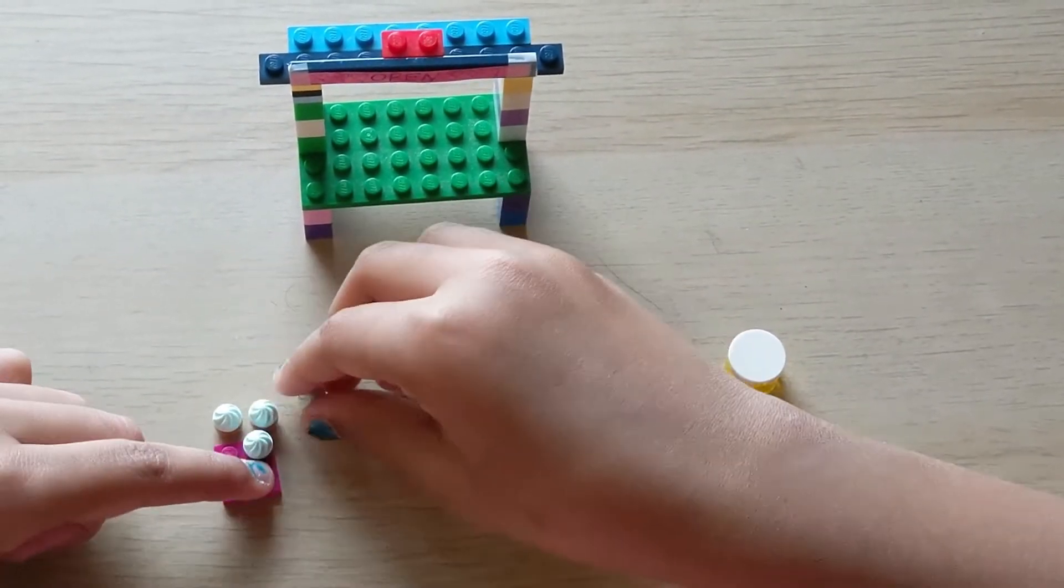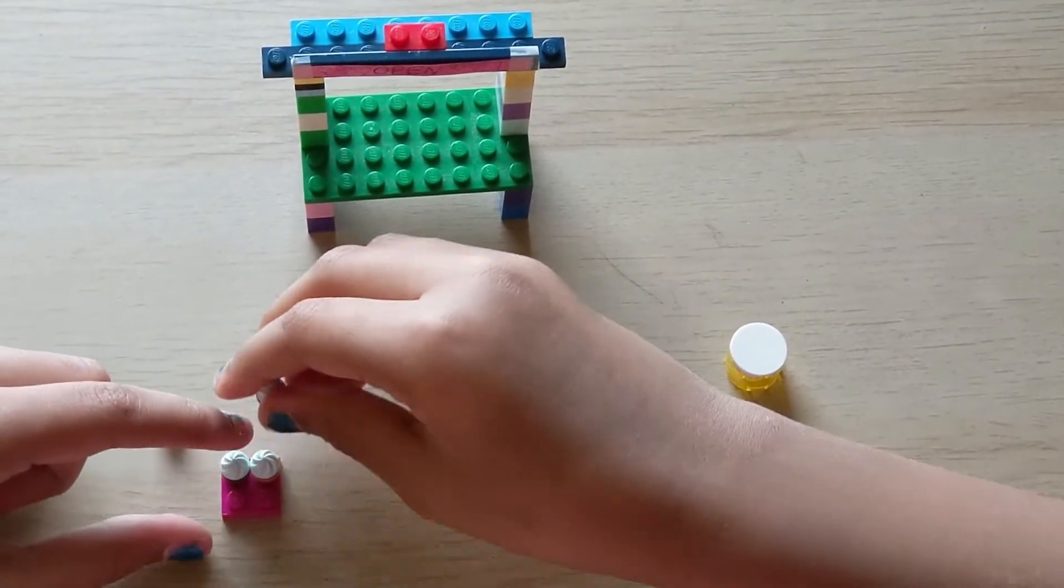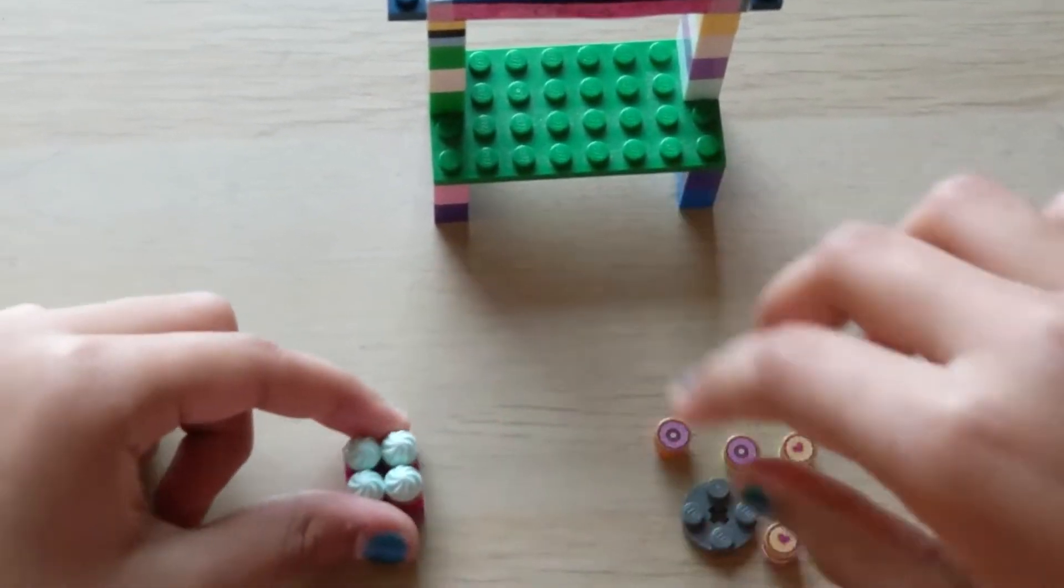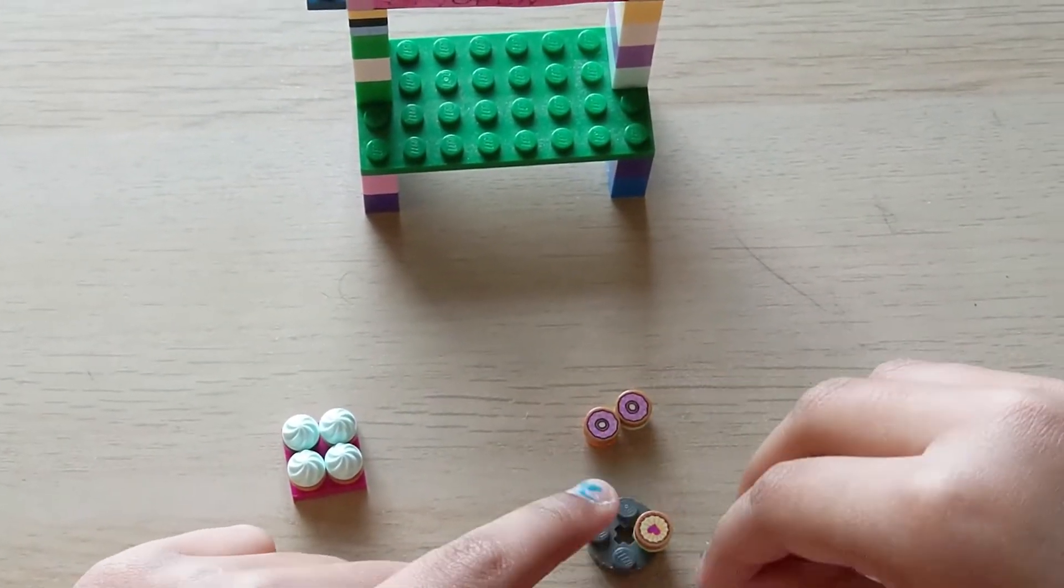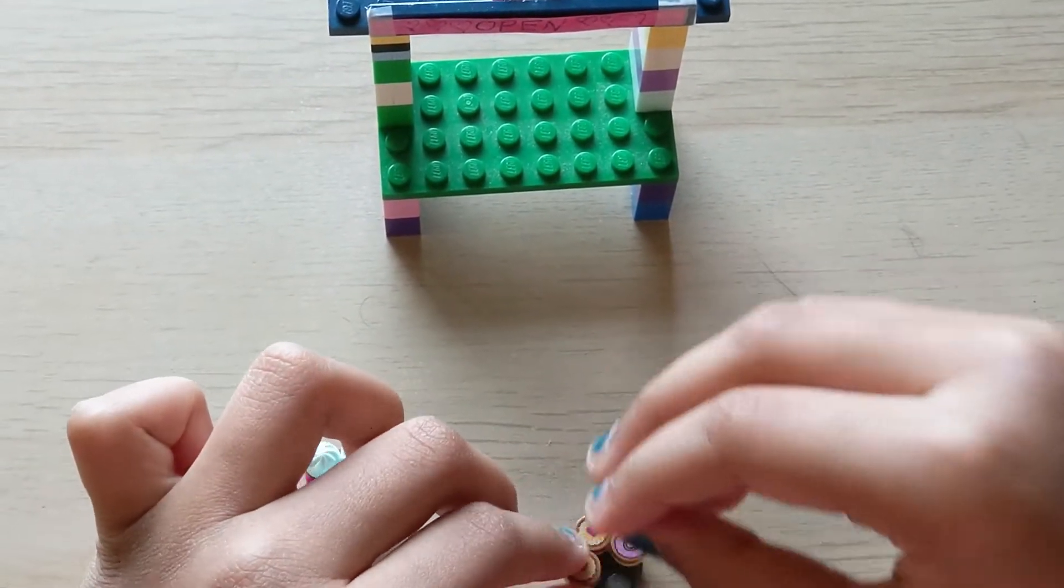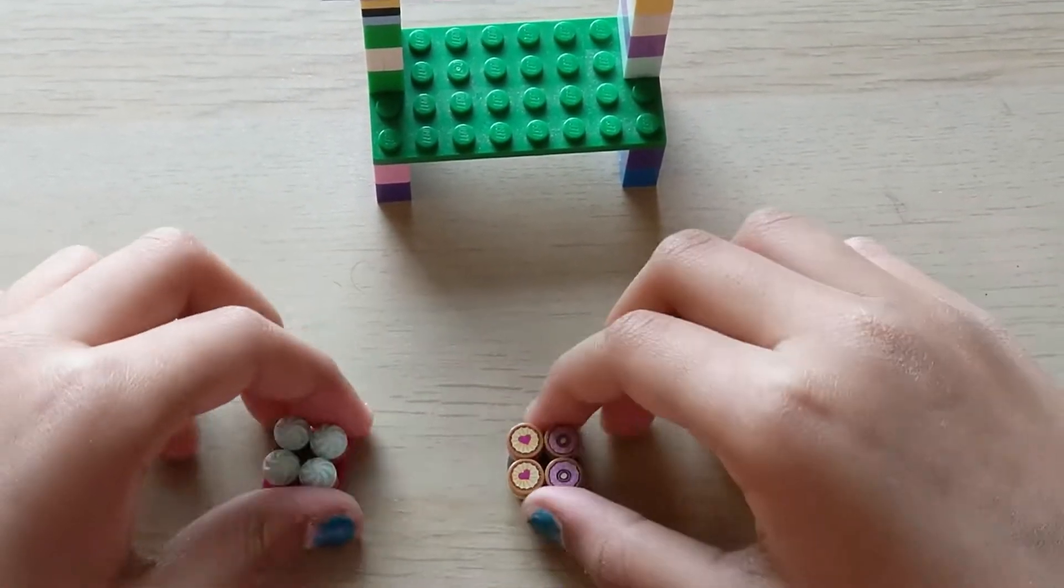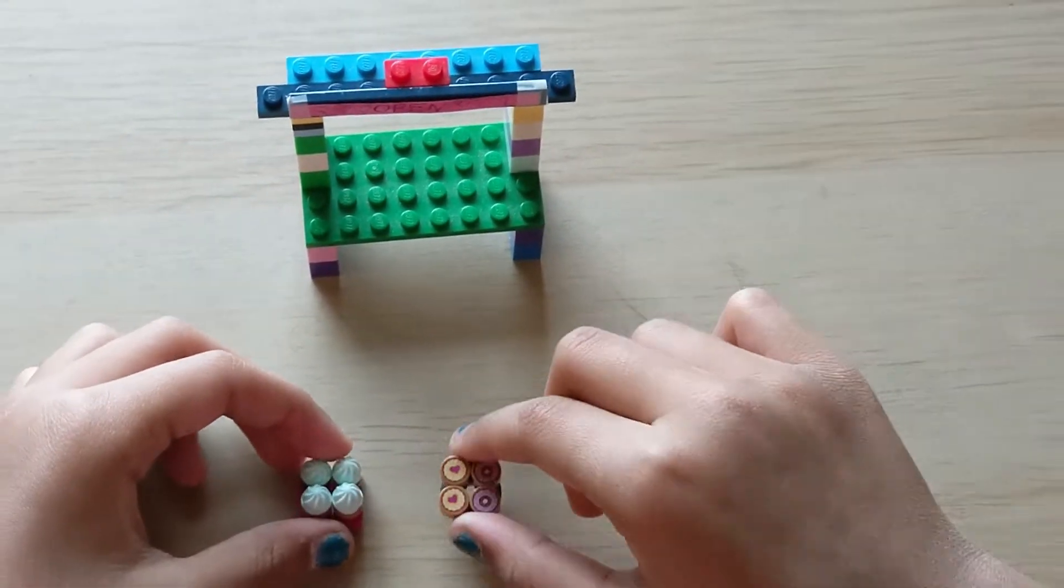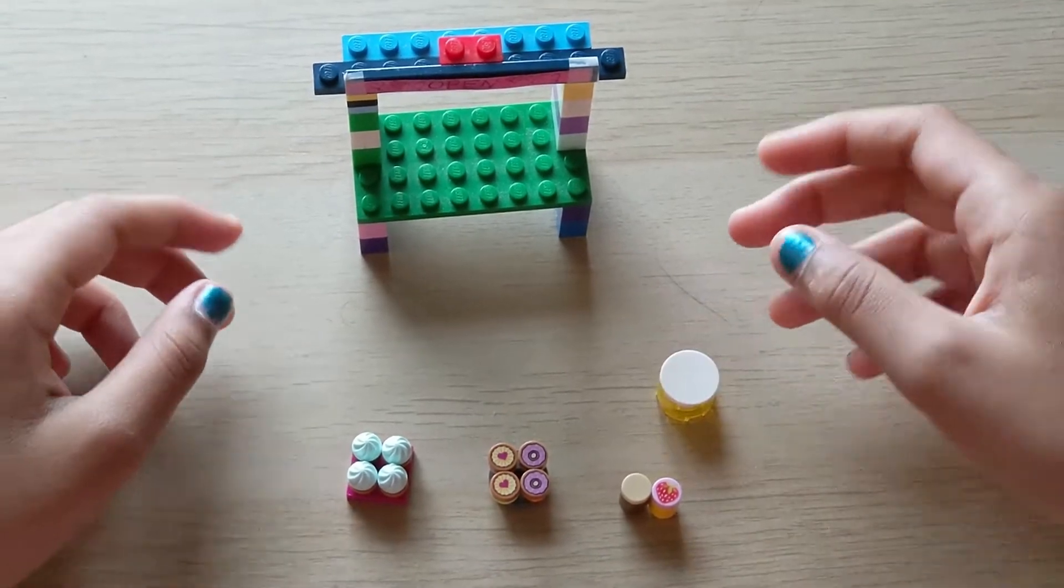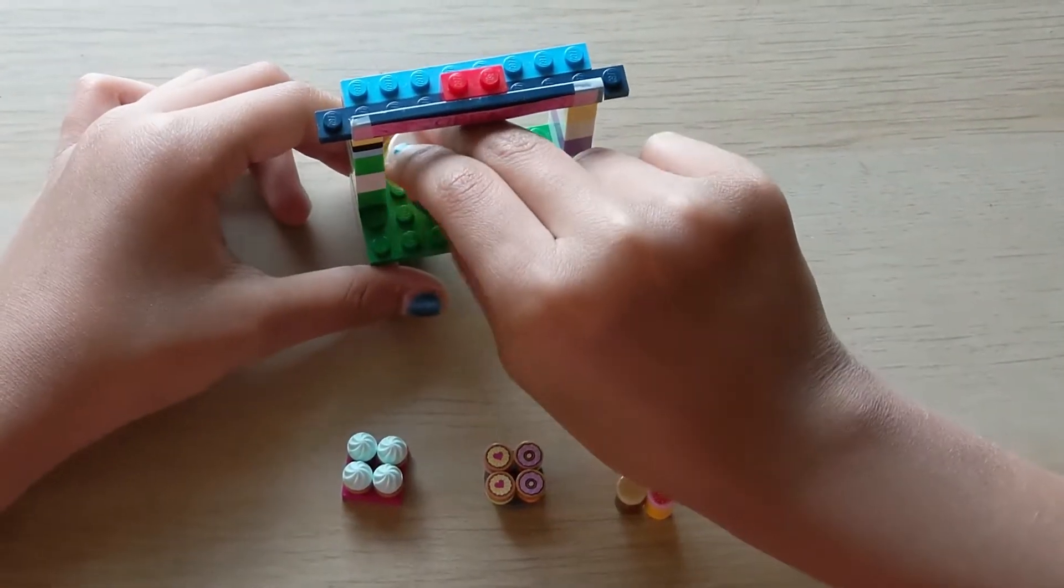So now we're gonna be adding the food, because what's a cupcake stand without its cupcakes? Now you might recognize this food. It's probably because this is the exact same food I used in Olivia's cupcake cafe. So we have cupcakes, donuts, and cookies—yummy—a cake, and drinks. So now we're gonna be adding them into the stall.